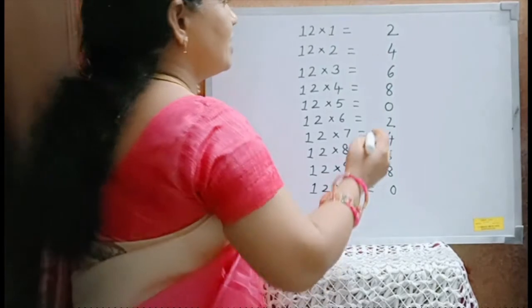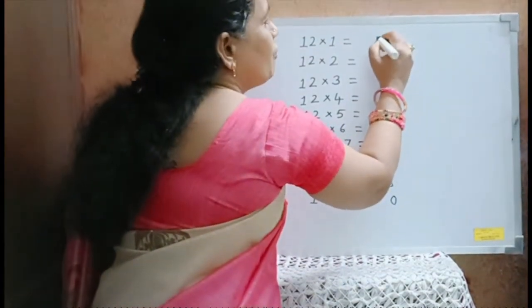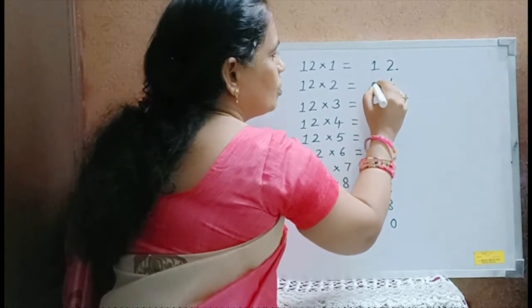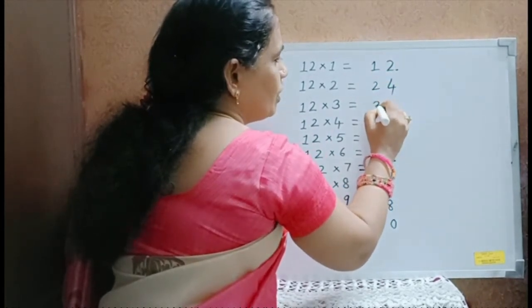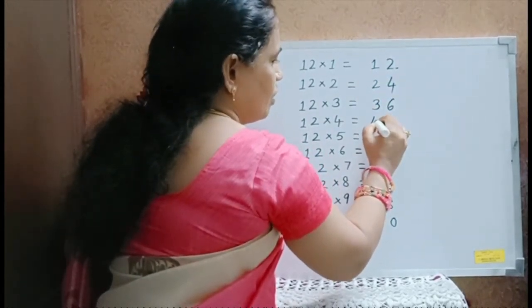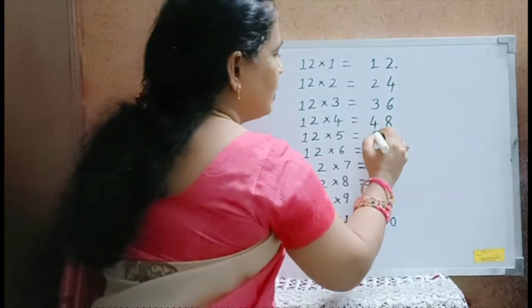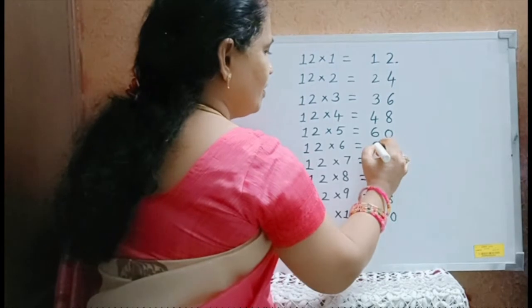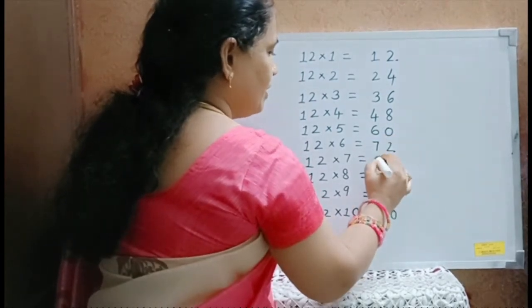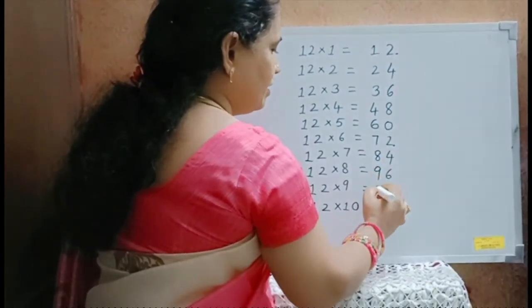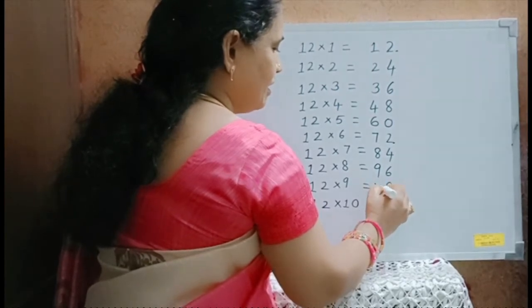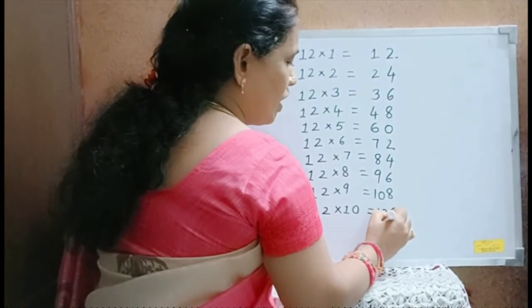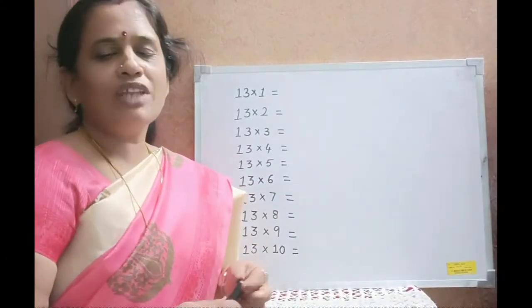For the tens digit, we start from 1: 1, 2, 3, 4, skip 5 and then write 6, 7, 8, 9, 10, and skip 11 and write 12.